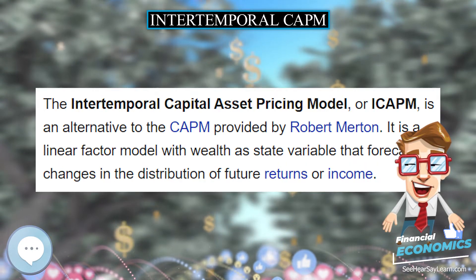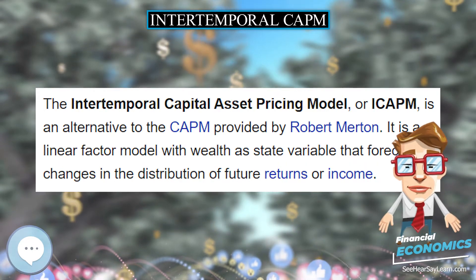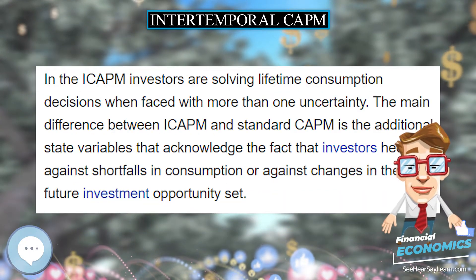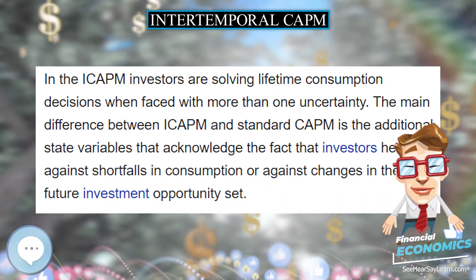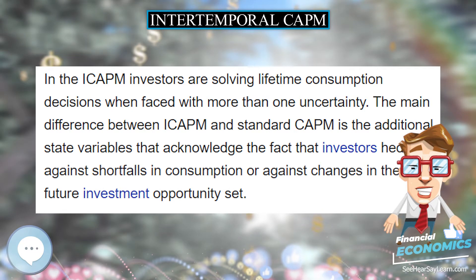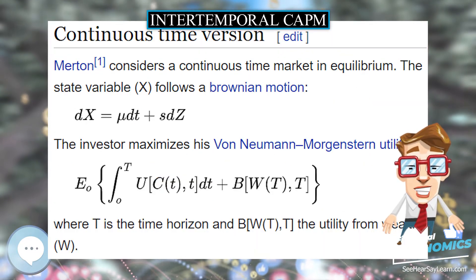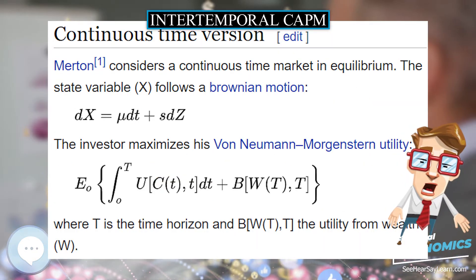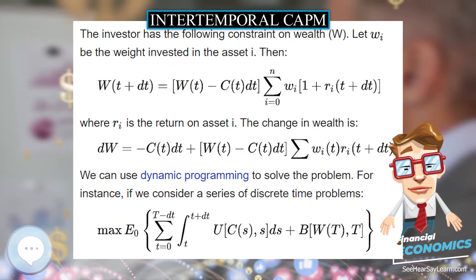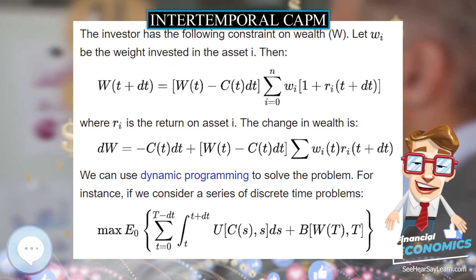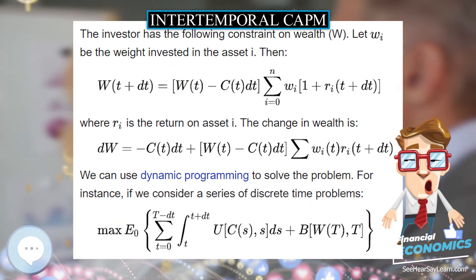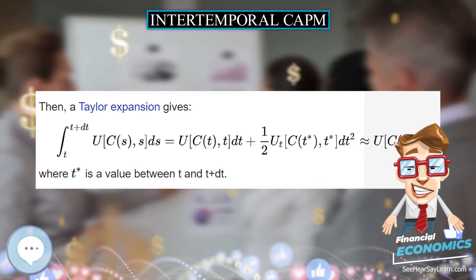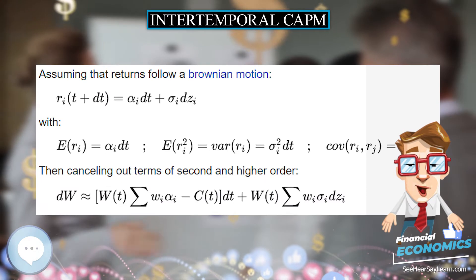We can use dynamic programming to solve the problem. For instance, if we consider a series of discrete time problems, a Taylor expansion gives an expression where T* is a value between T and T plus dT. Assuming that returns follow a Brownian motion, and cancelling out terms of second and higher order.